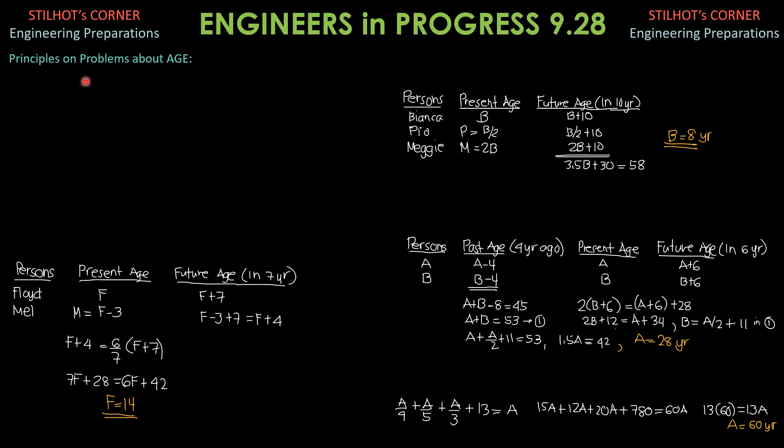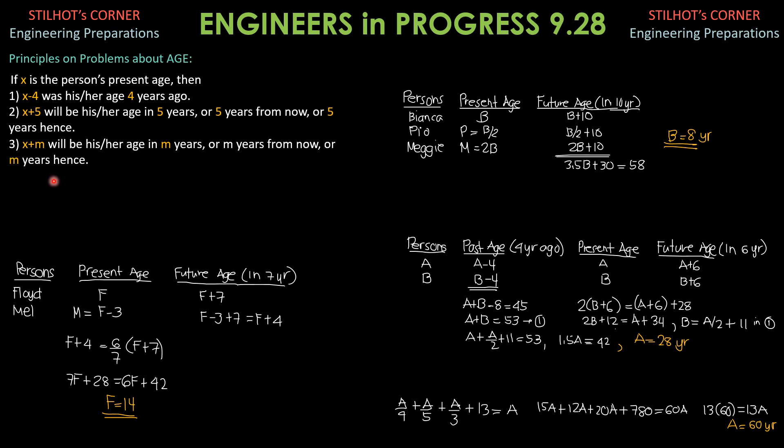We have now another type of problems on age, and this would be the principles. If X is the person's present age, then X minus 4 was his or her age 4 years ago. X plus 5 will be his or her age in 5 years or 5 years from now or 5 years hence. X plus M will be his or her age in M years or M years from now or M years hence. And the difference in ages between two persons mentioned or involved is constant. There's no other condition here. The two persons should be alive always at the time unless specified in the problem.